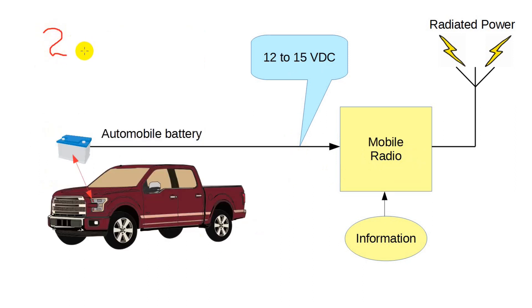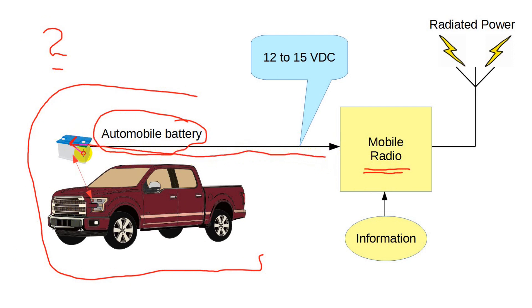Here's the second common scenario, a mobile installation. In this case, we take power directly from the vehicle's battery. VHF and UHF radios designed for mobile use come with rather long power leads to get all the way to the vehicle's battery.